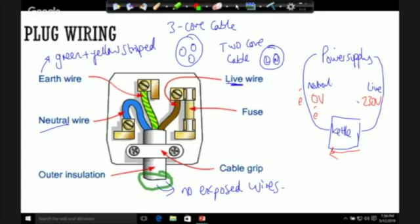So the neutral wire is always at zero volts and the live wire is always at 230 volts for mains electricity.